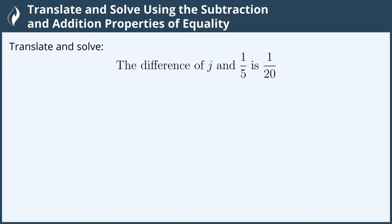Translate and solve: the difference of j and one-fifth is one-twentieth. We translate from left to right just like we read, and so we'll start on the left of this sentence and it says the difference.